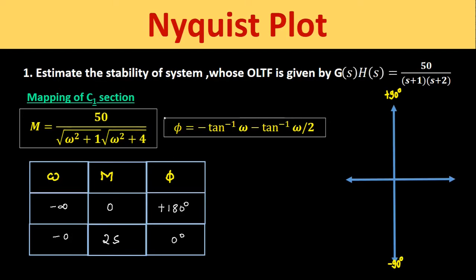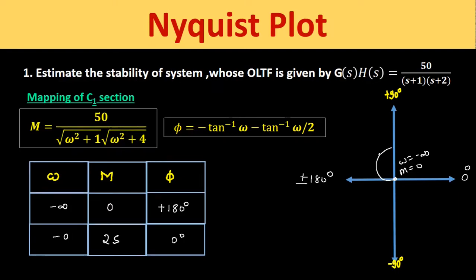Now we draw the mapping of the C1 section in the GH plane. Along the +180° line, we mark magnitude = 0 at ω = −∞. The plot moves upward and ends at M = 25 at ω = −0 on the 0° line. The rotation is clockwise, so the polar plot for the C1 section curves accordingly.